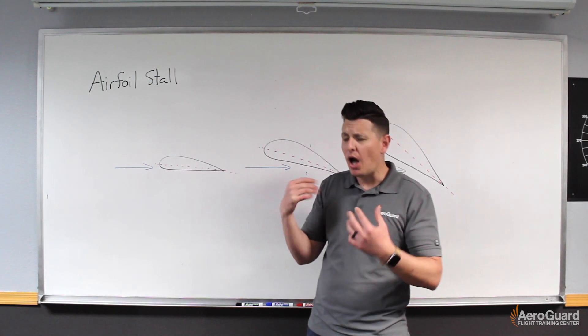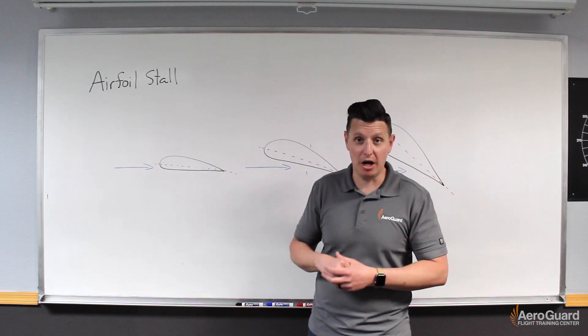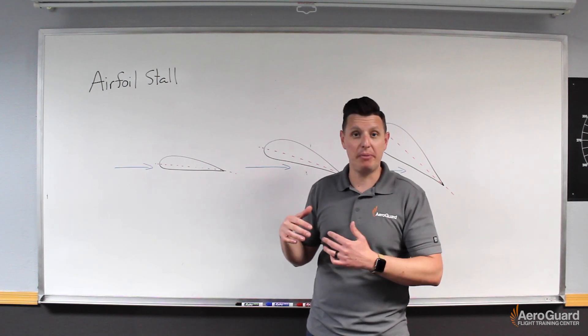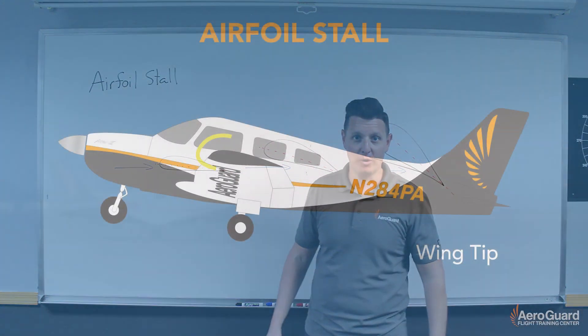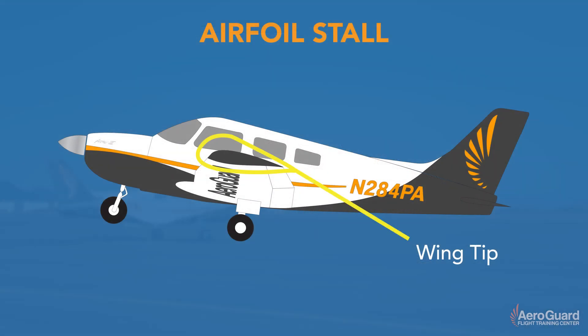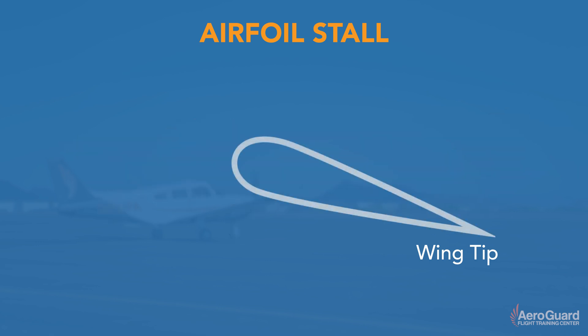So to get us started I want to go over some basic terminology so we can all be on the same page with the vocabulary I'm going to use. First we'll take a look at one of our Archer wings. If we create a cross section and draw an imaginary line from the leading edge to the trailing edge of the wing, this line is referred to as the chord line.